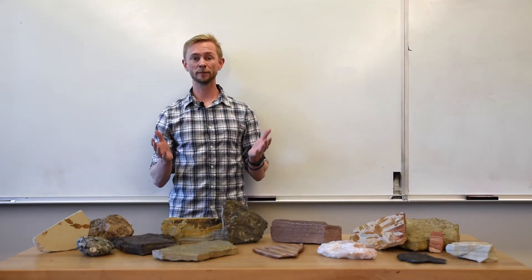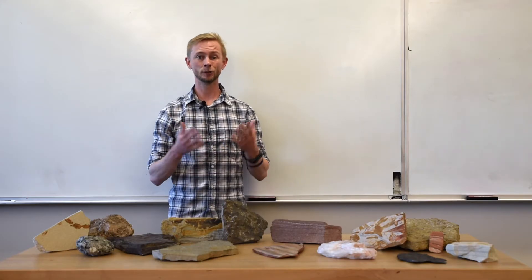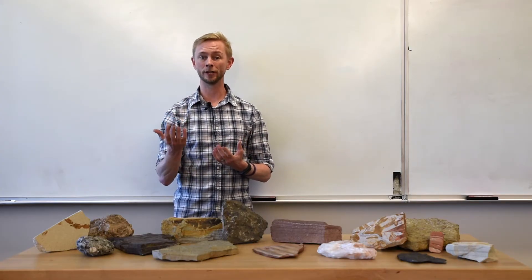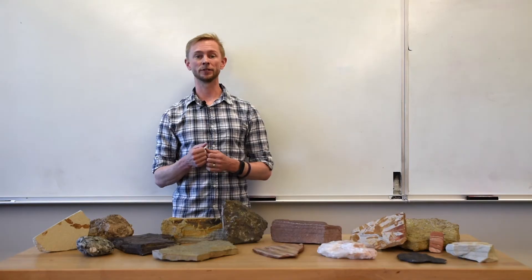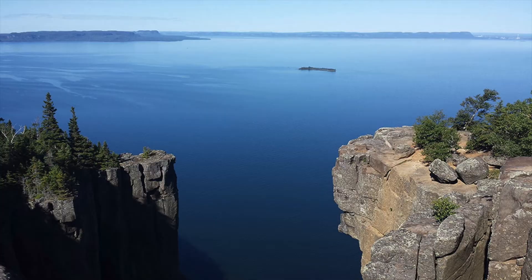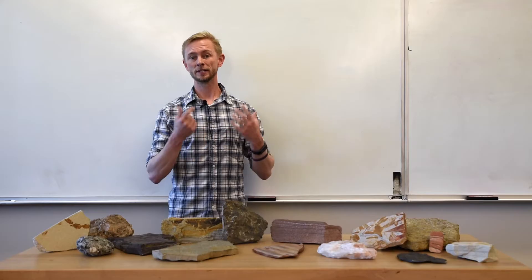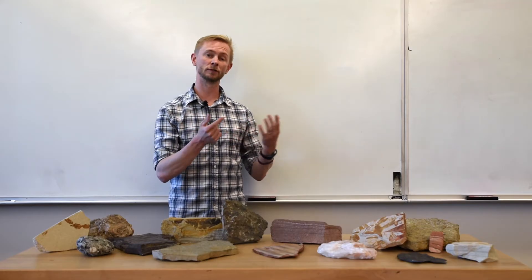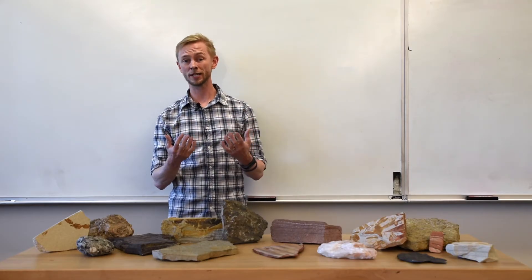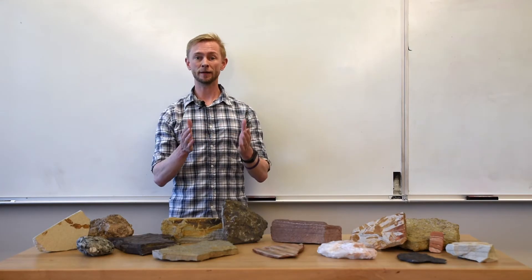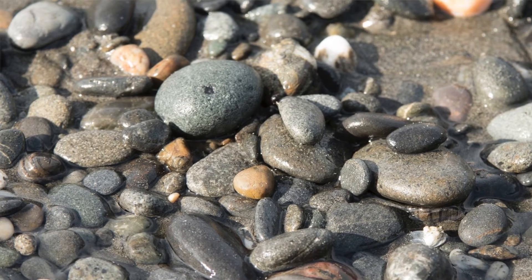Following transport, the sediment then reaches a depositional environment — locations on the Earth's surface where the products of physical or chemical weathering can accumulate over time. Locations where clastic sediments accumulate are often associated with rivers, lakes, glaciers, deserts, beaches, and shallow to deep marine environments. Sediments that accumulate in each of these different depositional environments will record the energy and processes that both transported and deposited that particular sediment. For example, sediment transported and deposited by rivers is often rounded in shape, as the transport involves the rolling and bouncing of individual grains within a river channel.